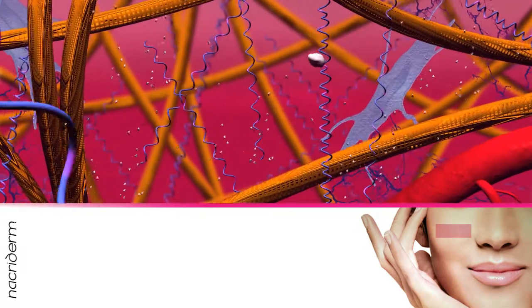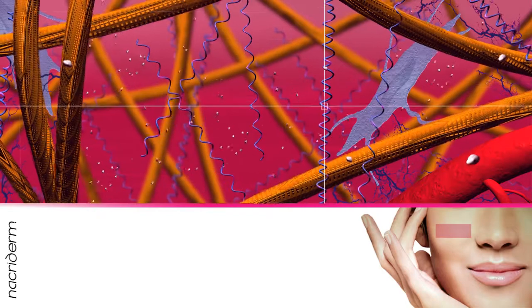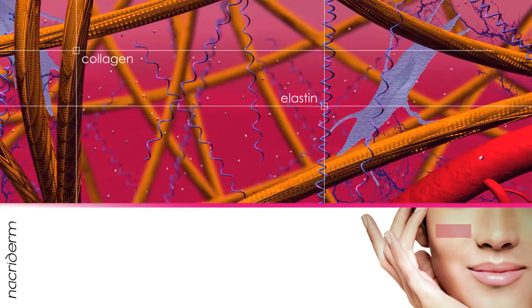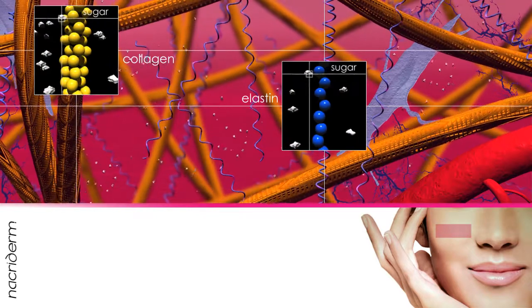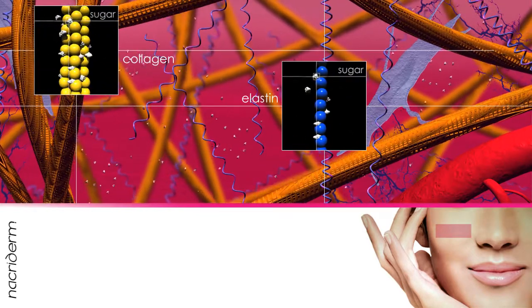In the dermis, elastic and collagen fibers are the protein structures most affected by glycation. Their peptide chains are progressively rigidified by the attachment of sugars, which in time form rigid bonds between fibers.